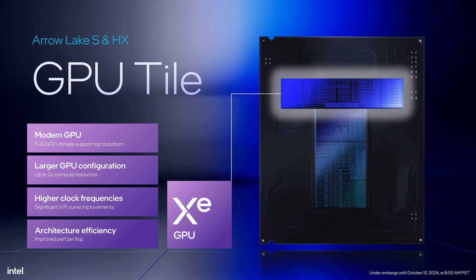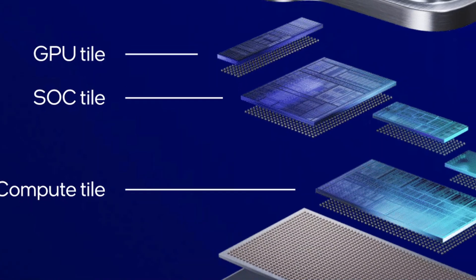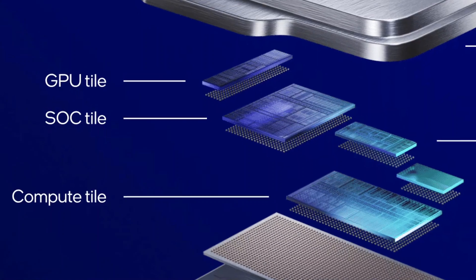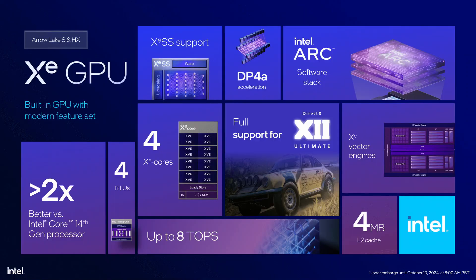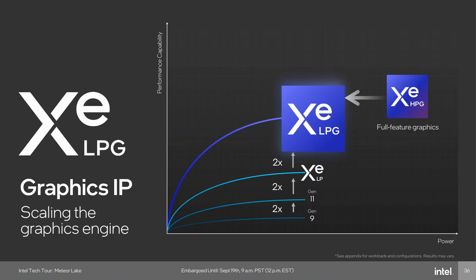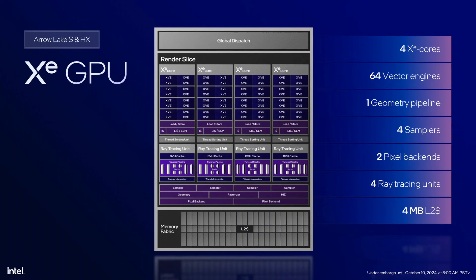In this video, I'm having a look at the Arrow Lake integrated graphics. The Arrow Lake integrated graphics are located on the graphics tile and are disconnected from the other compute IP blocks. It doesn't share the tile with any other IP blocks, not even the media engine. The integrated graphics features four XELPG Cores — an improved version of the XELP Cores from Raptor Lake, which effectively doubles the execution units. However, it is still based on the Alchemist architecture. The four XE Cores consist of 64 execution units and 512 shader units.